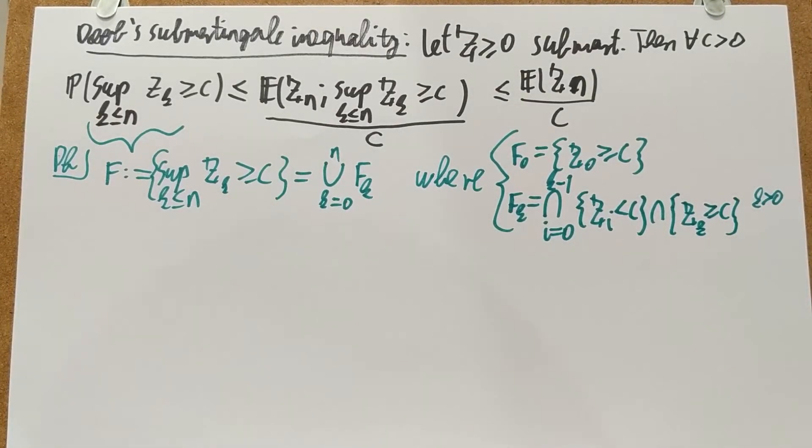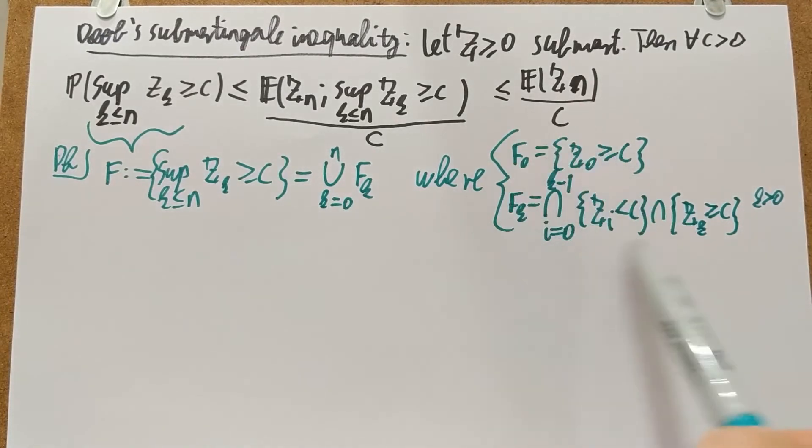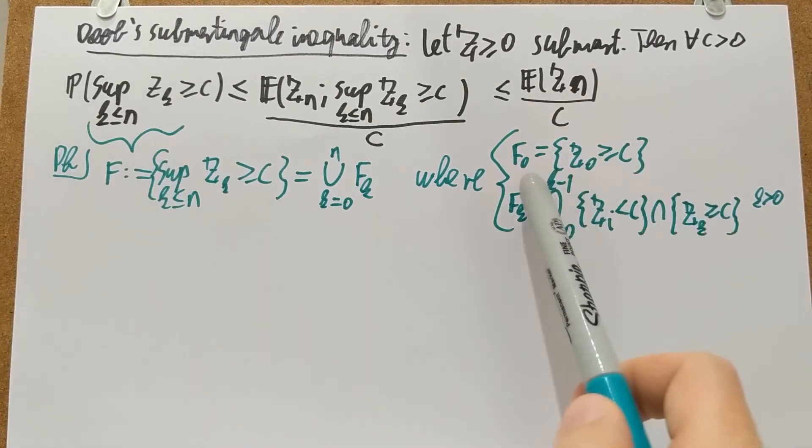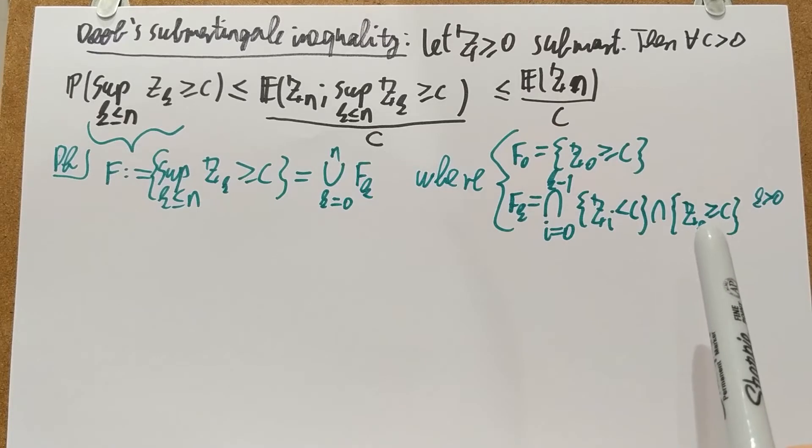So that's going to be my definition of F_0 and F_K. Essentially what I'm doing here is, if one of these people is at least C, I'm looking at the first instance where that happens. It could happen at F_0 or it could happen at F_K first, and all the other ones are below C before K.